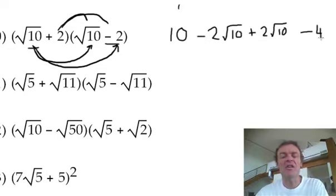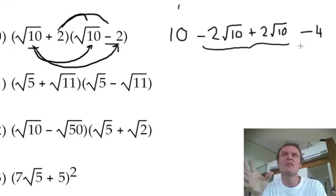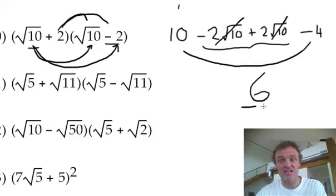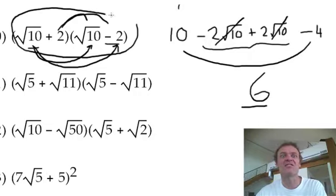Now, here's the little thing for this one. Little sneaky thing. Look at those. 2 root 10, take away 2 root 10. No root 10s. It's gone. I'm just going to do this right now. All you've got is what's 10 take away 4. It's 6. Believe it or not, that's the answer to that. That is 6.